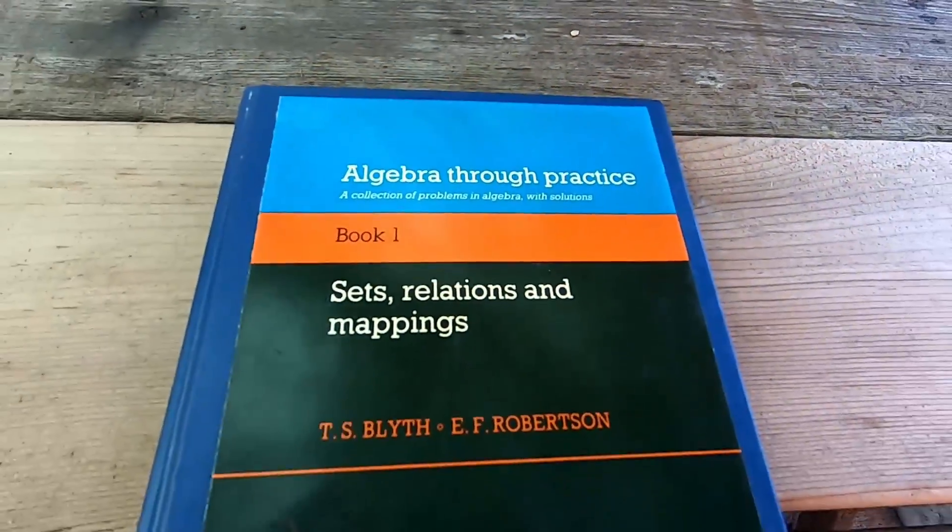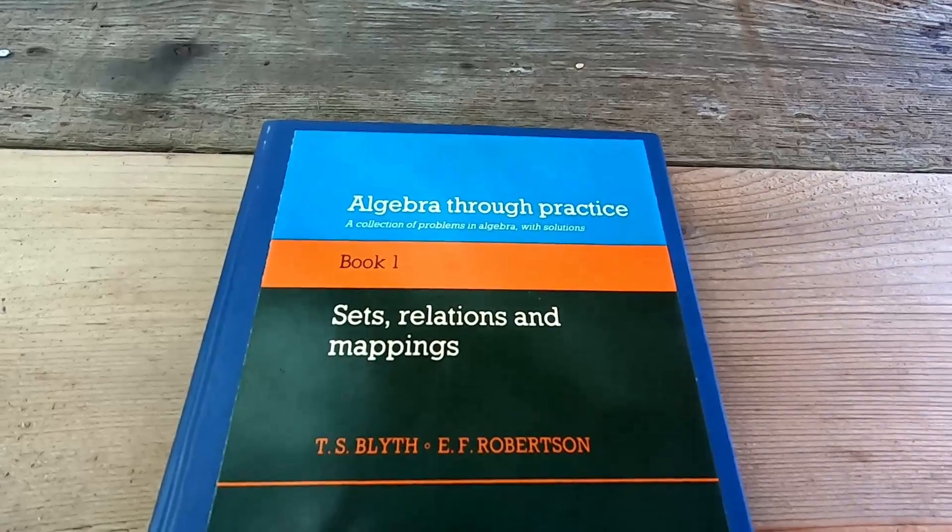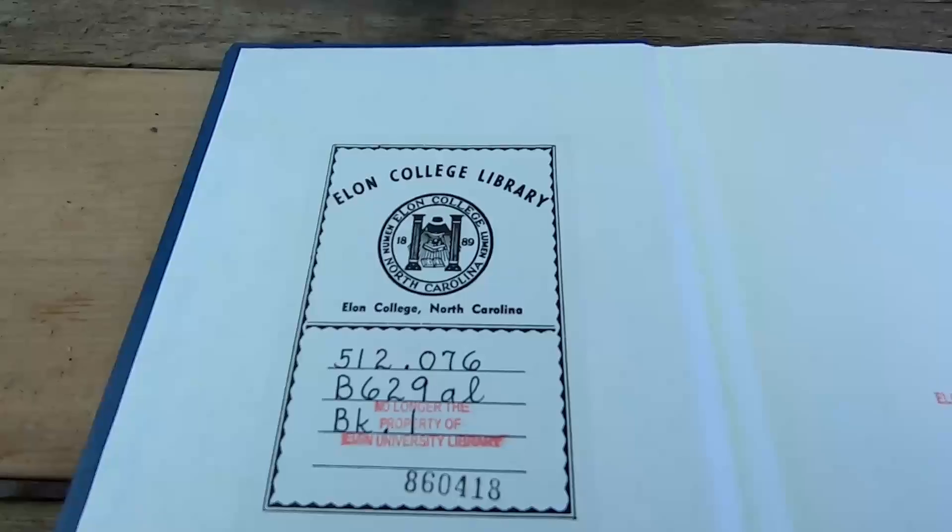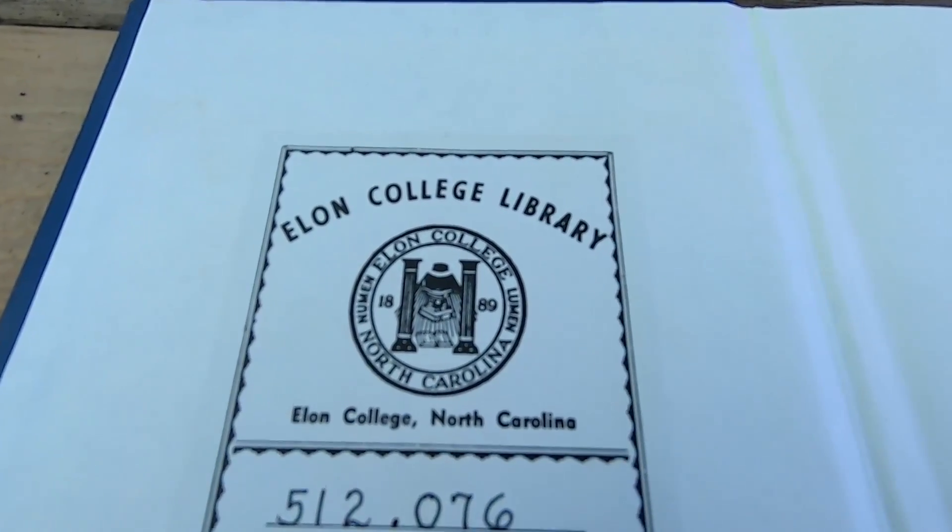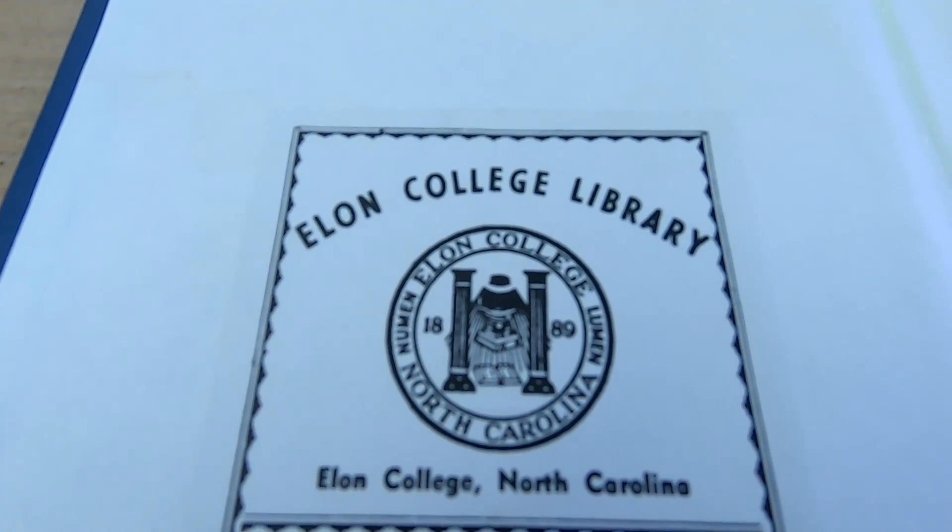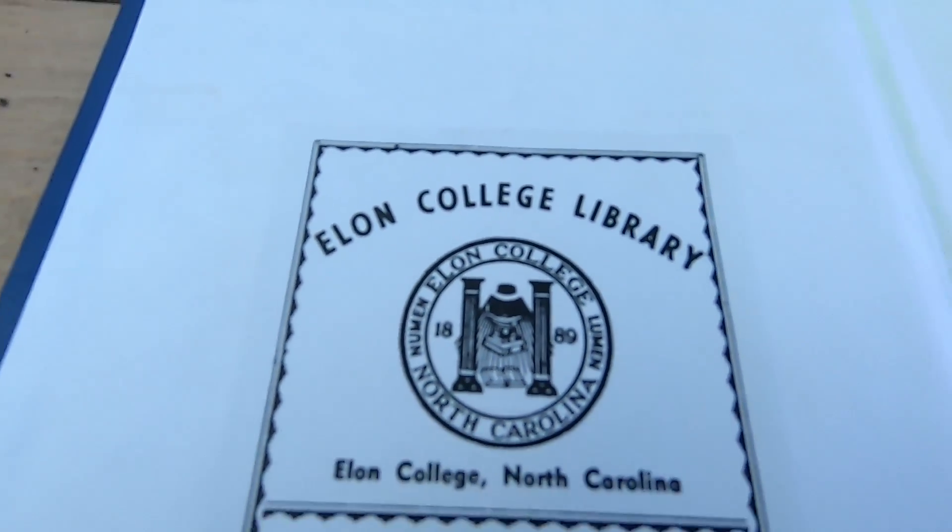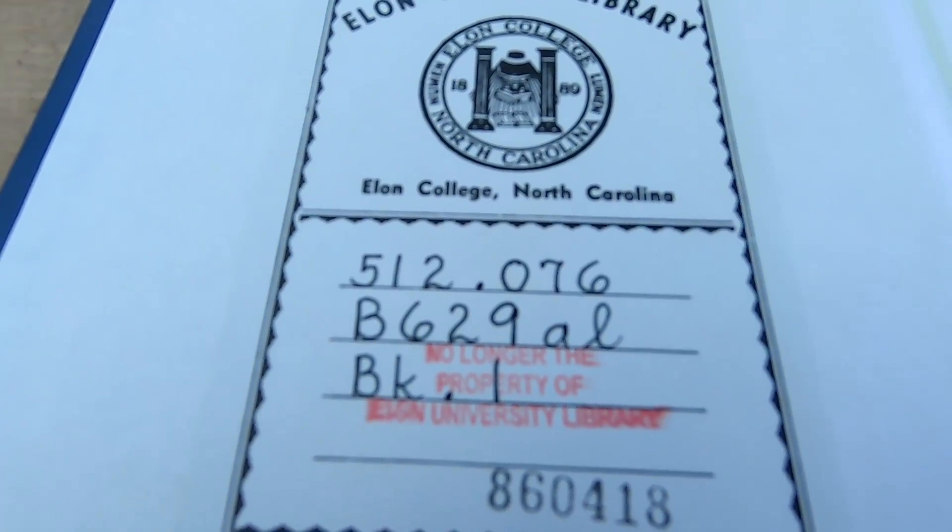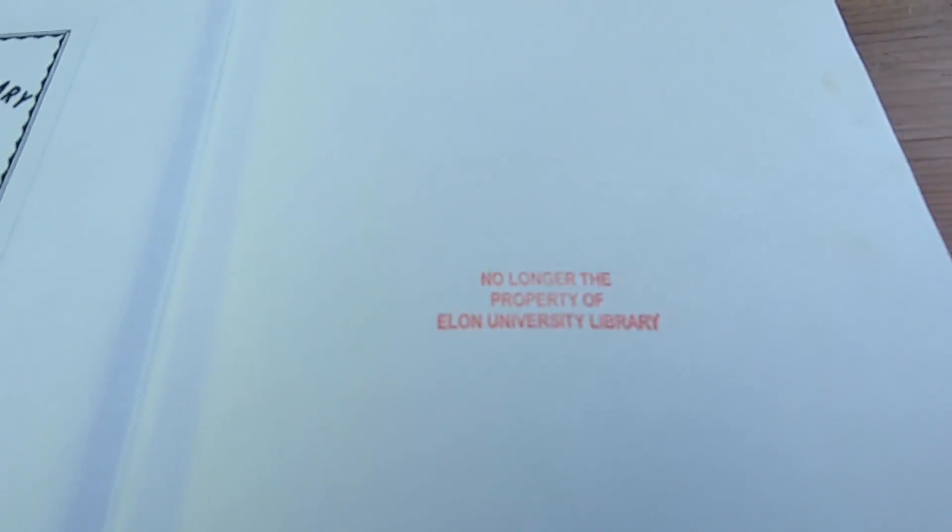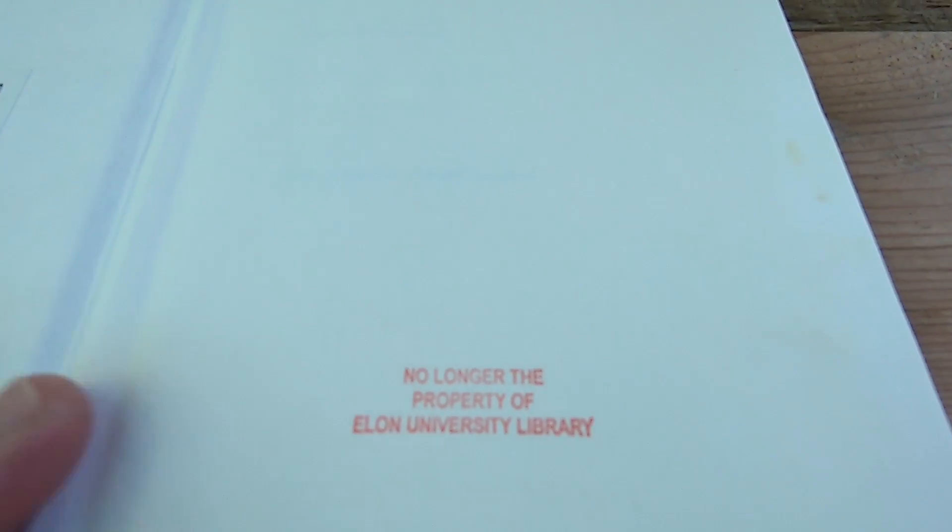Let's take a look inside this book. This is an excellent book for math majors. So this is the inside cover. You can see it says Elon College Library, North Carolina. Maybe it's Elon and it's no longer the property of this library. So this is an ex-library copy and again, I'm shocked that this is a hardcover. I own other copies of the Algebra Through Practice series and they're all softcovers so I was really excited to see that this was a hardcover.